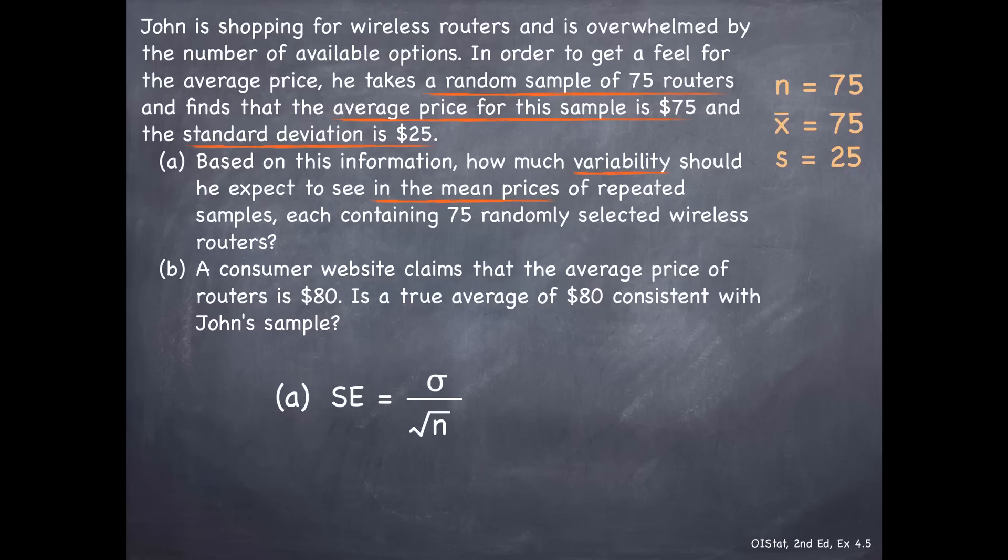In this case, we don't have σ, but we can estimate it with our sample standard deviation, divided by the appropriate sample size square root: s divided by √n equals 25 divided by √75, yielding $2.89.